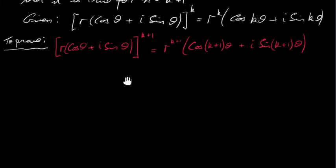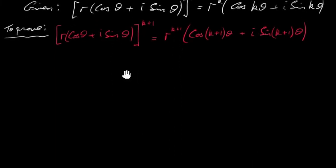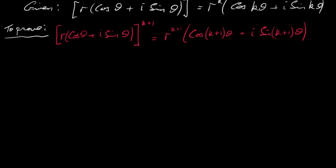What we want to prove is that it's true for k + 1. In other words, we want to show that r(cos θ + i sin θ)^(k+1) is equal to r^(k+1)(cos(k+1)θ + i sin(k+1)θ). We're going to do this by taking the left-hand side and turning it into the right-hand side — manipulating this until we get the right-hand side.